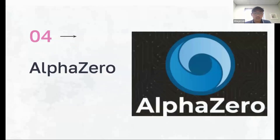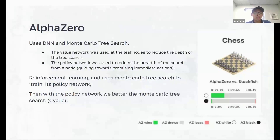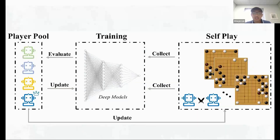Next, the future of chess engines. We have AlphaZero, developed by Google's DeepMind division. AlphaZero is a deep neural network and Monte Carlo search tree algorithm. It uses two networks: the value network and the policy network — the value network being the end goal and the policy network being the trained network. AlphaZero trains using a reinforcement learning principle where Monte Carlo tree search trains the policy network, and then the policy network improves the Monte Carlo search tree, going in a cyclic manner — hence the game playing against itself.